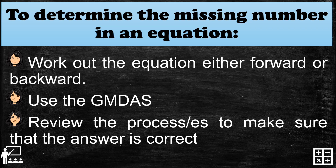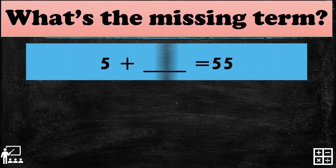Let me show you some examples so that you can learn and understand how to determine the missing number in an equation. My first equation is 5 plus blank equals 55. In this equation, it should be equal on both sides. As you can see, there is a total number on the left side, so we're going to find out what to add to 5 to come up with 55.